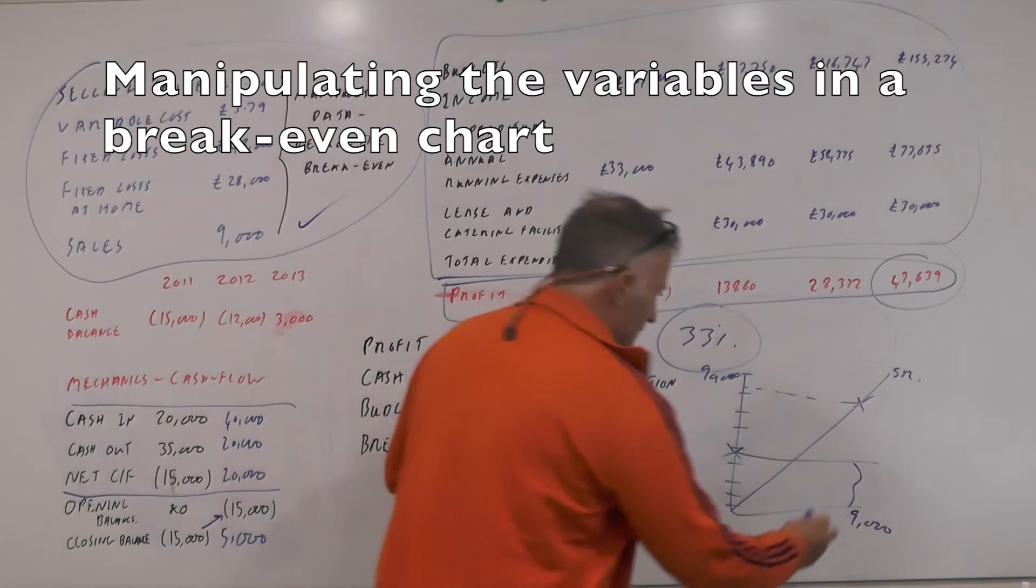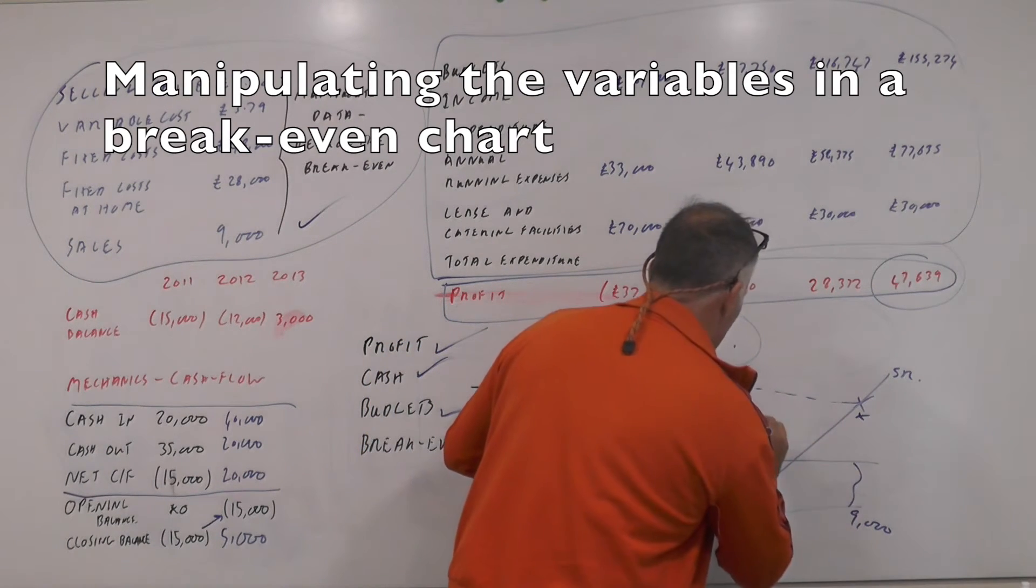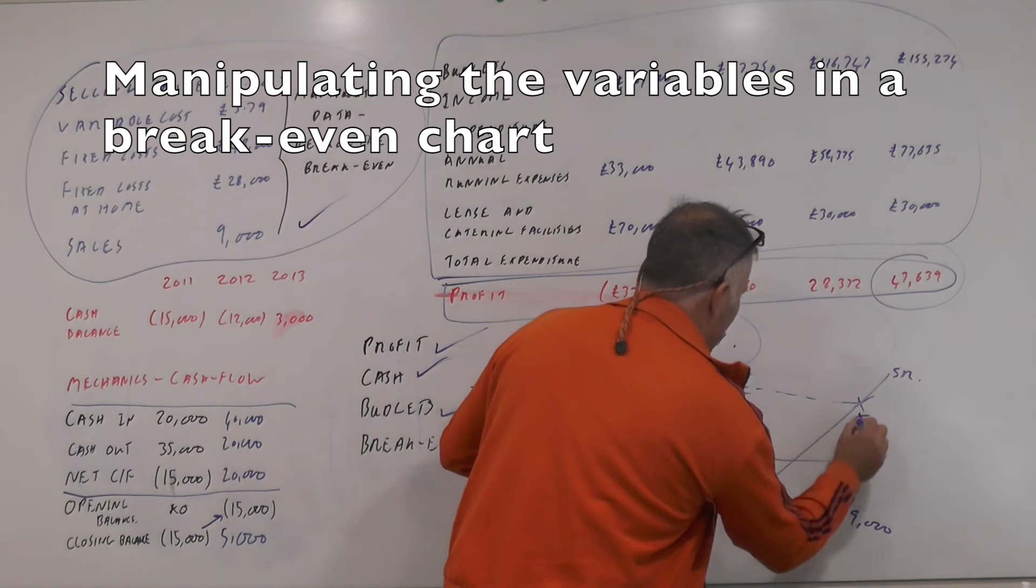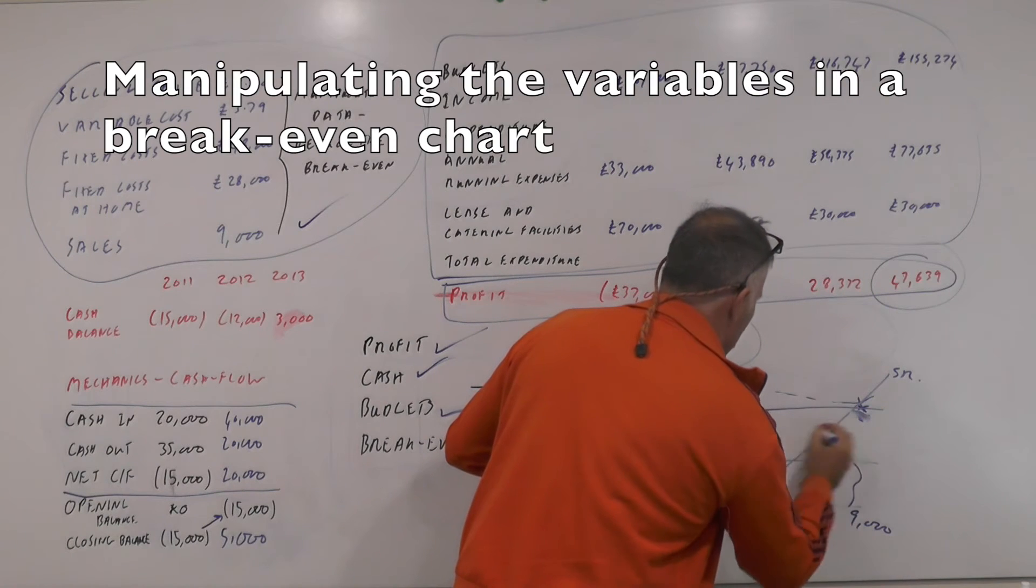So 38,100 pounds plus the 48,000 probably comes about 81,110 quid. Something like that anyway. 81,110 quid. So I put that on there and I draw a line up from there to there.